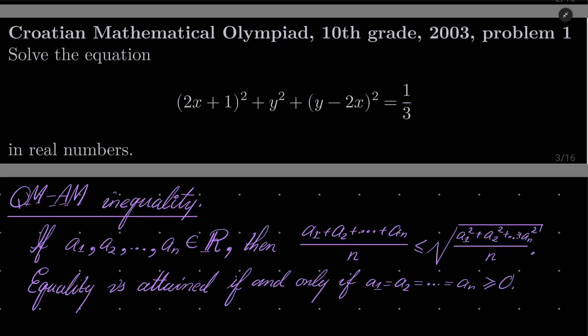The famous QM-AM inequality, the inequality between the quadratic mean and the arithmetic mean, which says that if we have n numbers, real numbers, positive or negative, it does not matter, then the arithmetic mean of these numbers is always less than or equal to the quadratic mean.